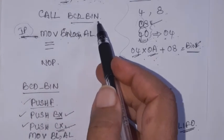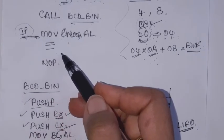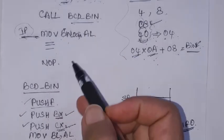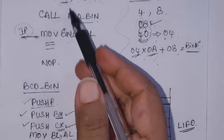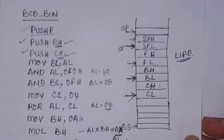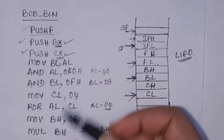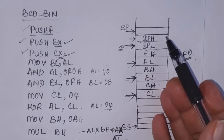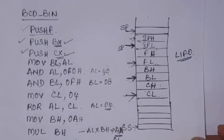This BCD to binary subprogram can be called again with a different BCD input in AL. You should be very careful with the push and pop instructions — the order in which you pushed the contents to the stack must be reversed when you pop back.